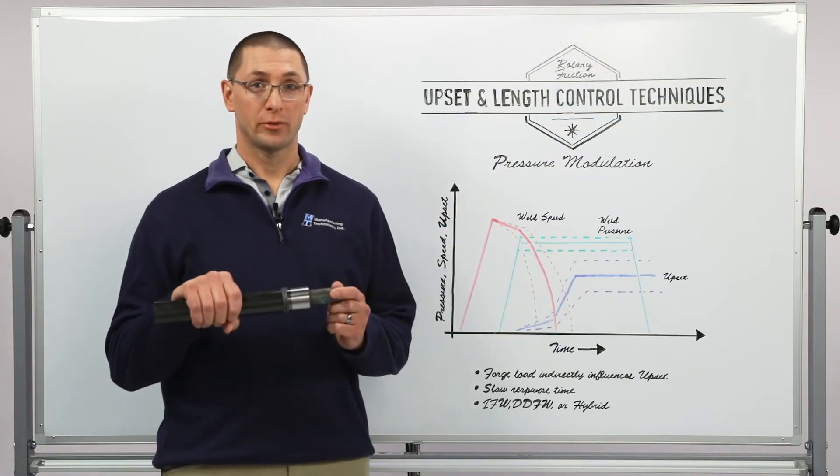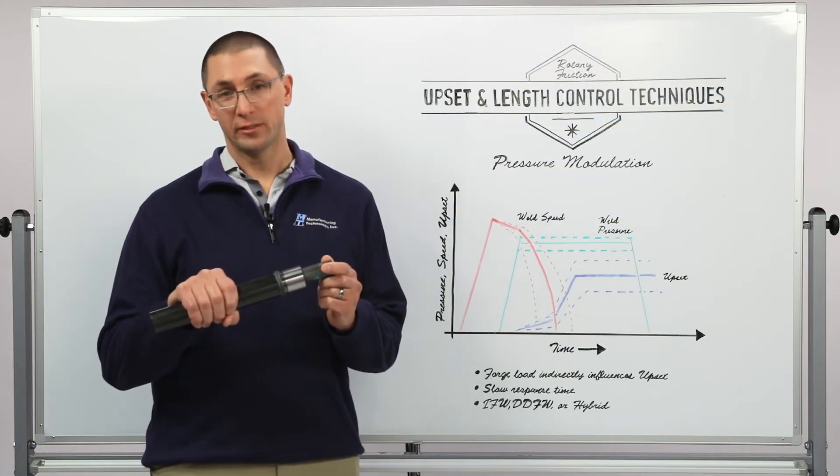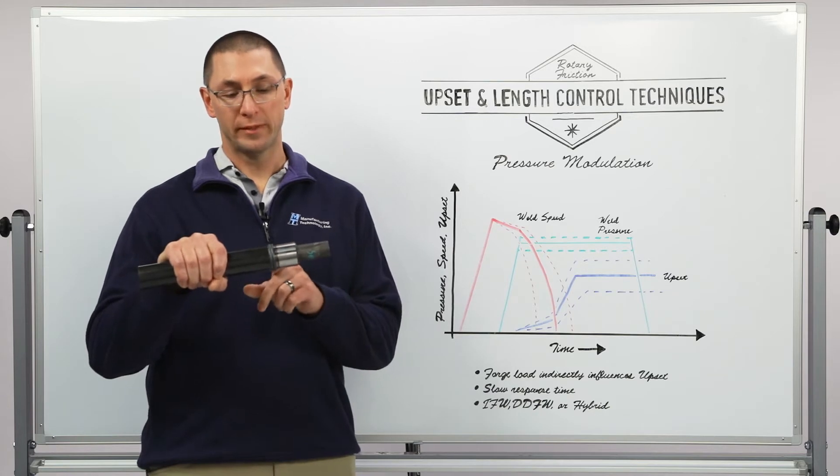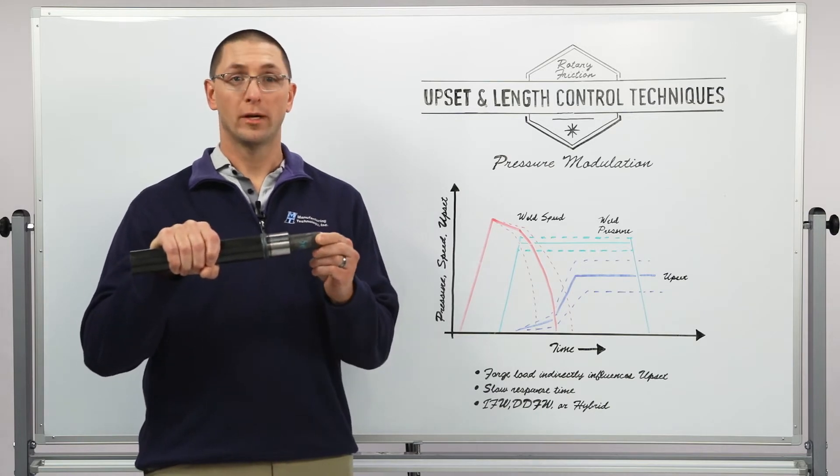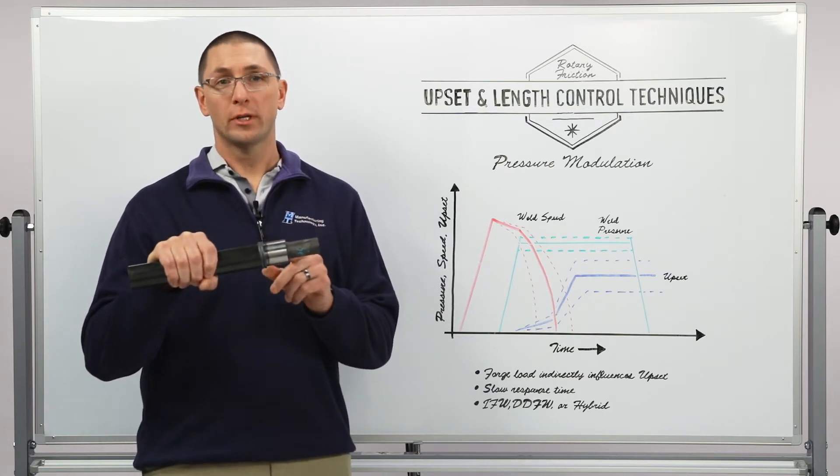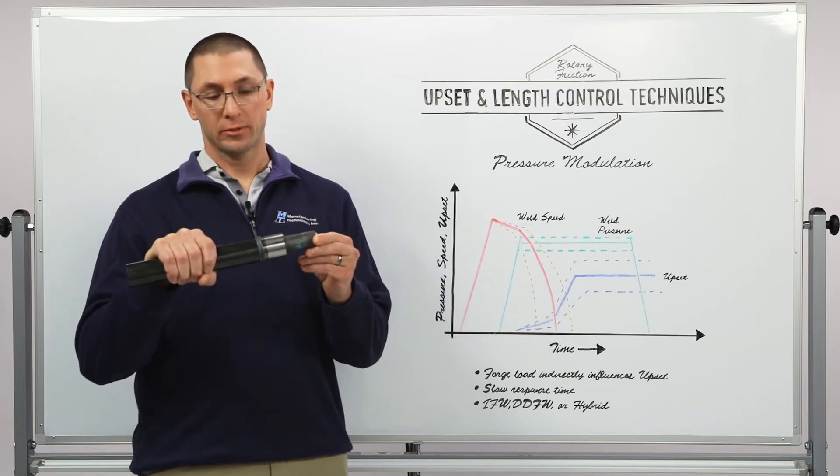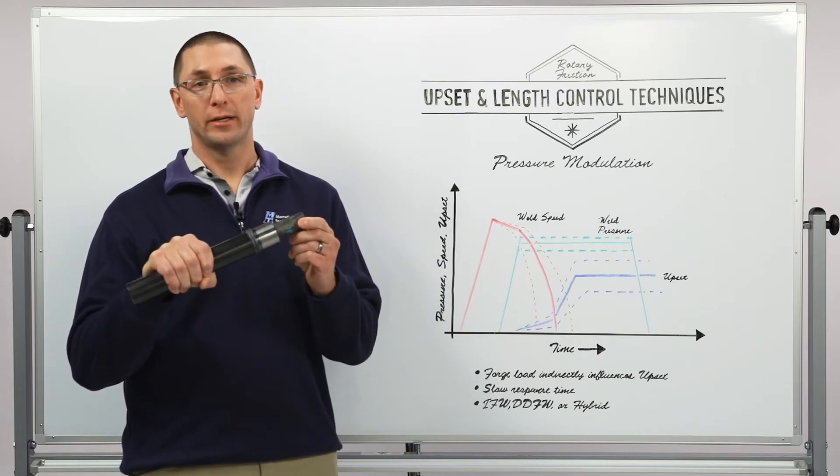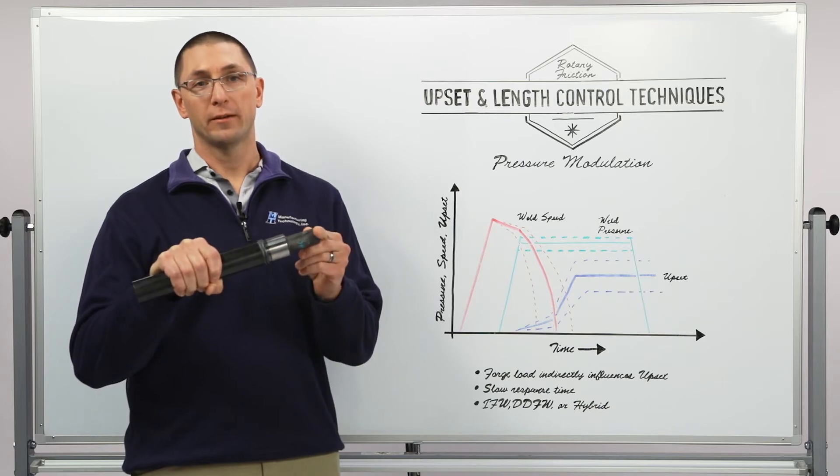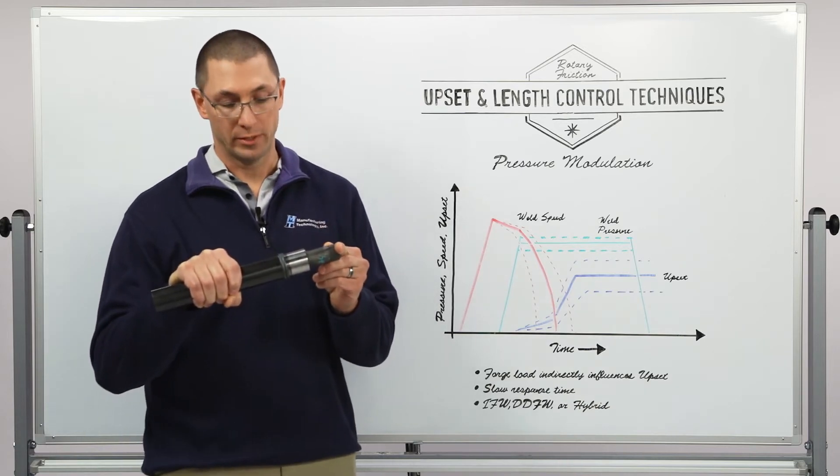Today we're talking about upset control. If you remember from previous episodes, we talked about the amount of upset that you get as a result of the weld. It is the shortening of the two parts as a result of friction welding. If your two parts have equal area, then you're going to get equal amounts of upset from both parts, assuming that they're the same material.